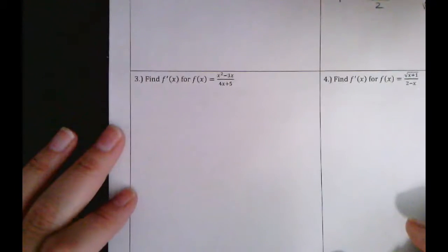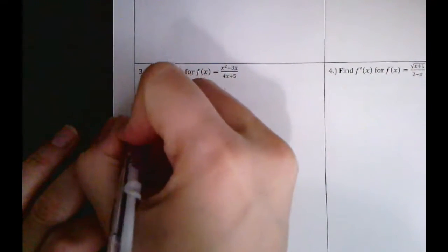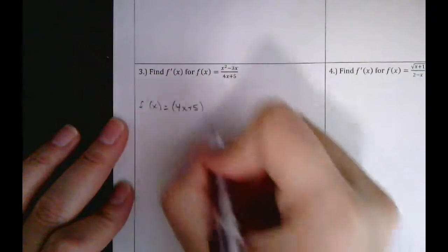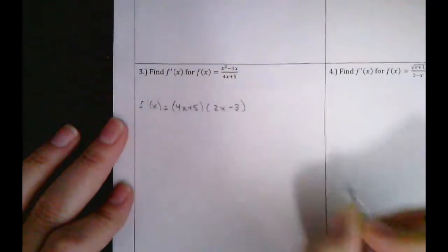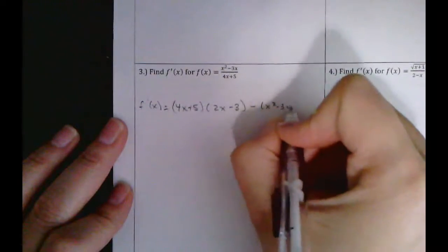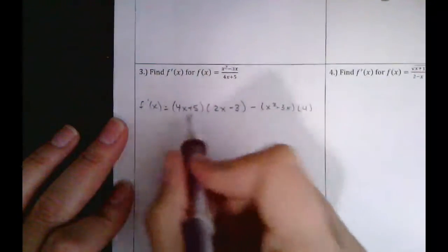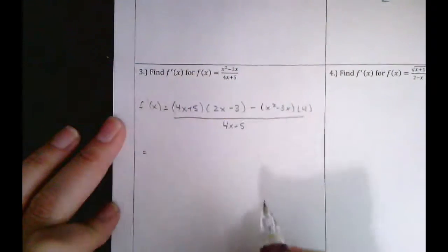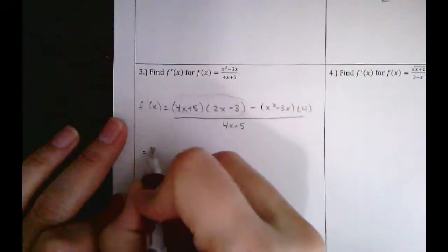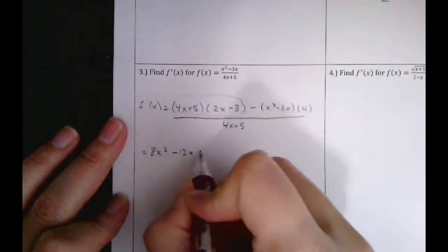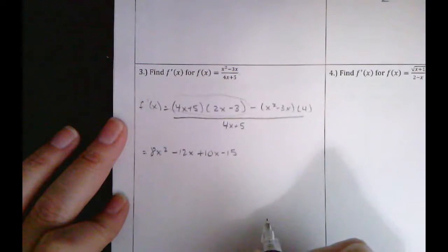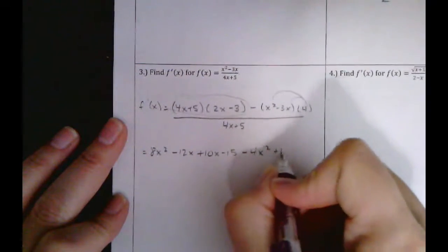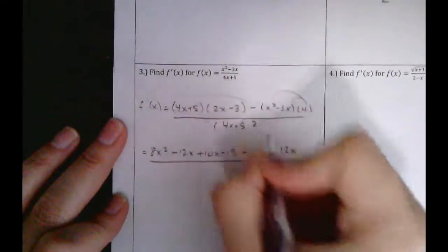For number three, you need the quotient rule. So we're going to do low d high minus high d low, all over low low. Low is four x plus five. D high is two x minus three. And then d low is four, all over low low. Now we need to simplify — you want to foil this out, so that's going to be 8x squared minus 12x plus 10x minus 15. Then distribute the negative four (it's negative because of the minus sign), so that's minus four x squared plus 12x.